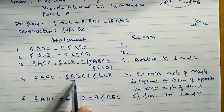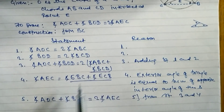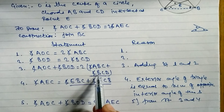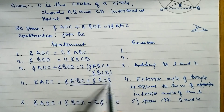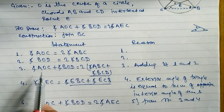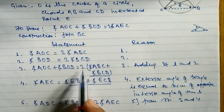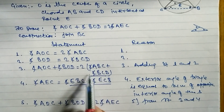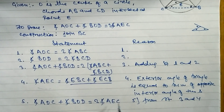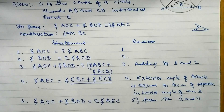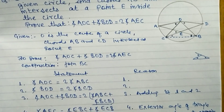This confirms our result. Since ABC equals EBC and BCD equals ECB, substituting into the expression from statement three gives us two times angle AEC, which is exactly what we needed to prove. Hence, angle AOC plus angle BOD equals two times angle AEC.